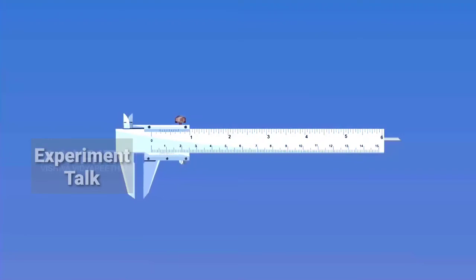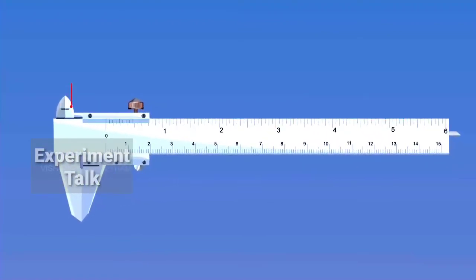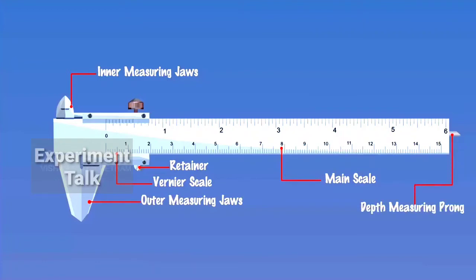Vernier Calipers. The main parts of Vernier Calipers are: Inner Measuring Jaws, Outer Measuring Jaws, Vernier Scale, Retainer, Main Scale, and Depth Measuring Prong.